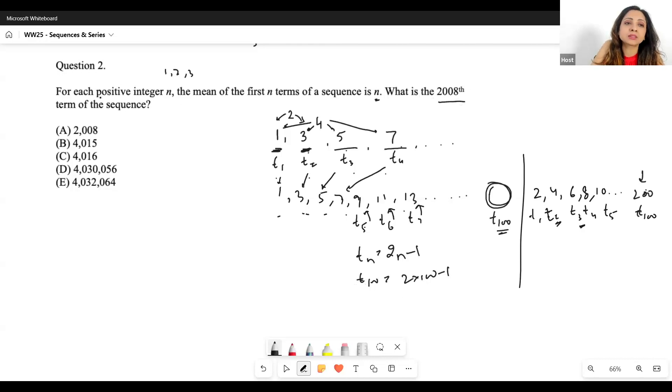What is the 2008 term of the sequence? This is pretty simple now. So then t2008 is going to be nothing but 2 into 2008 minus 1, which will give me 4, 0, 1, 5. So this will be my answer. So again, don't get confused. They're going to write it to confuse you, but you don't have to. The only tricky part of this question is this. Otherwise, you know that it's fairly simple. That, you know, mean of n terms is n, but you don't have to worry. Put n equal to 1. Put n equal to 2. Put n equal to 3. Find out the first few terms. And this will always work when you're given a relation.